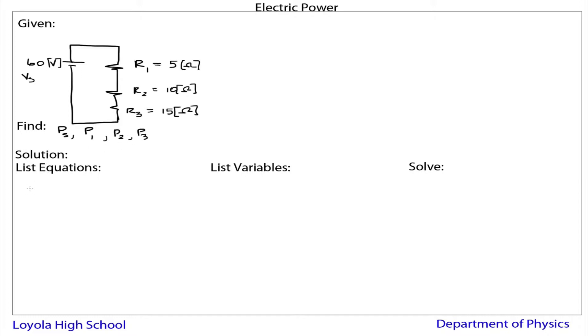So our basic power equation is P equals IV. So the amount of current going through any one of the circuit elements and the voltage across it. And then we're also going to use Ohm's law. Ohm's law comes in very handy when trying to find different things like voltages for the power equation. So those are our two equations.